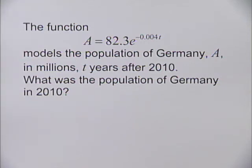The function A = 82.3e^(-0.004t) models the population of Germany, A, in millions, t years after 2010.